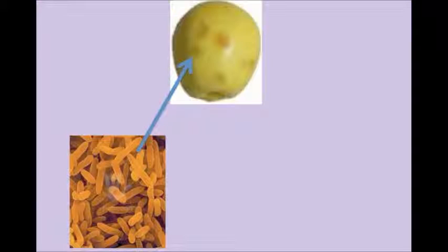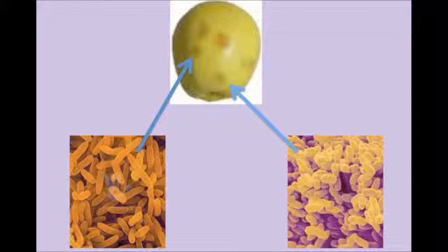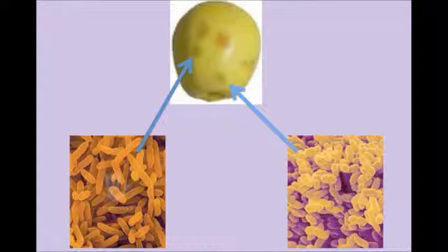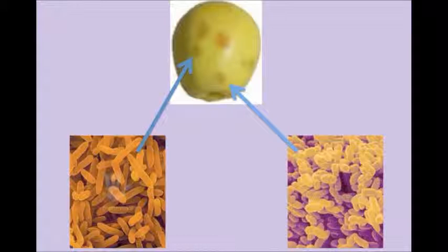Pseudomonas fluorescens and Erwinia carotovora are two specific bacteria known to cause soft rot. Pseudomonas fluorescens is notorious for being psychrotrophic, which means it can flourish in cold environments like refrigerators. E. carotovora flourishes at room temperature. Together, the bacteria immediately begin the soft rot process.